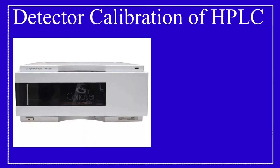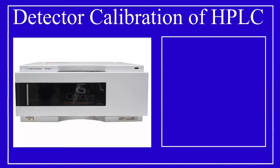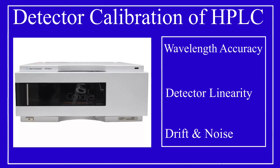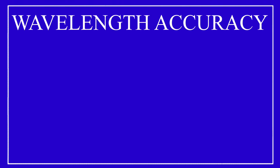The detector of HPLC is calibrated with the help of three calibration parameters, and those are: wavelength accuracy, detector linearity, and drift and noise. Let us learn about the wavelength accuracy test first.